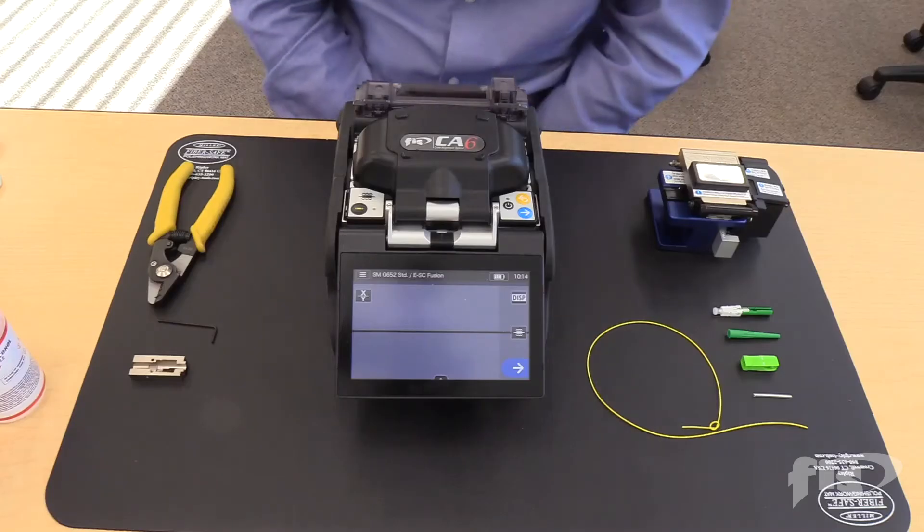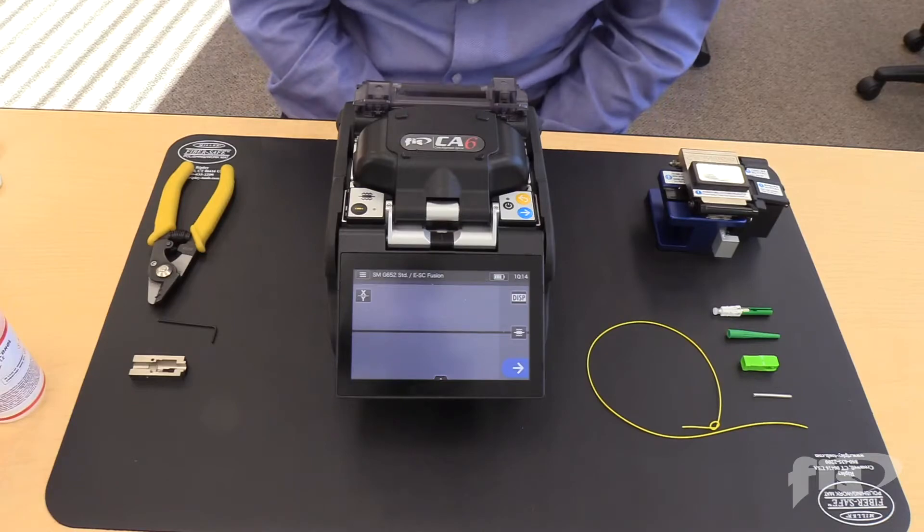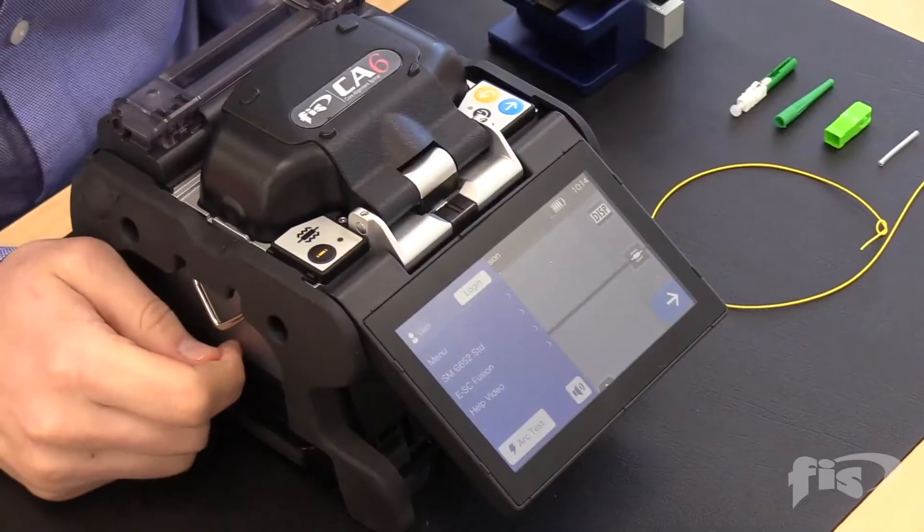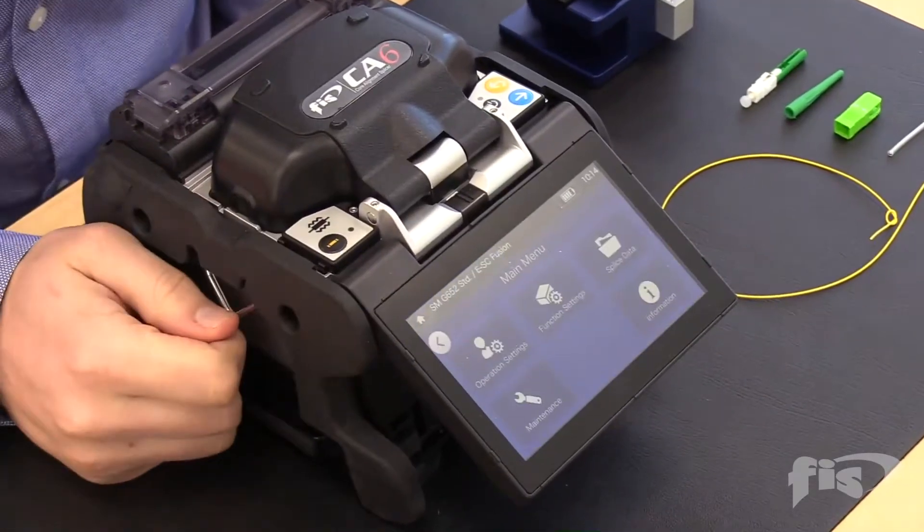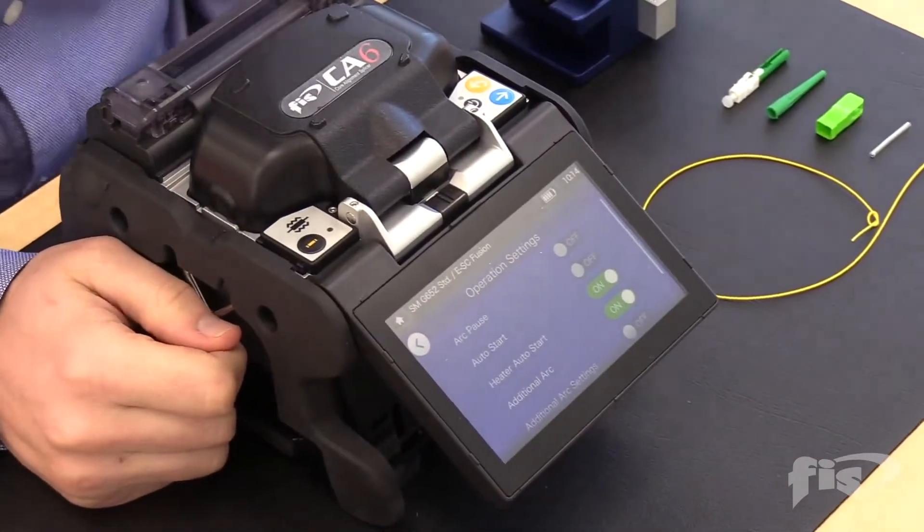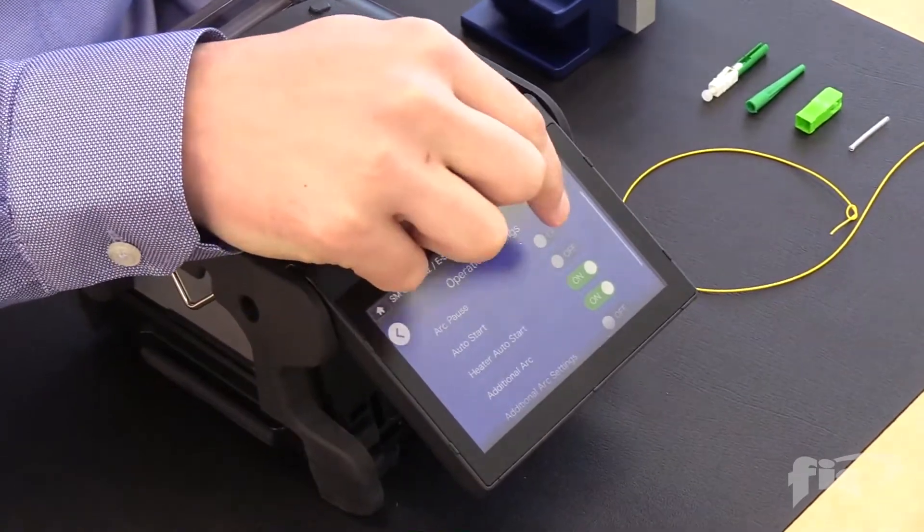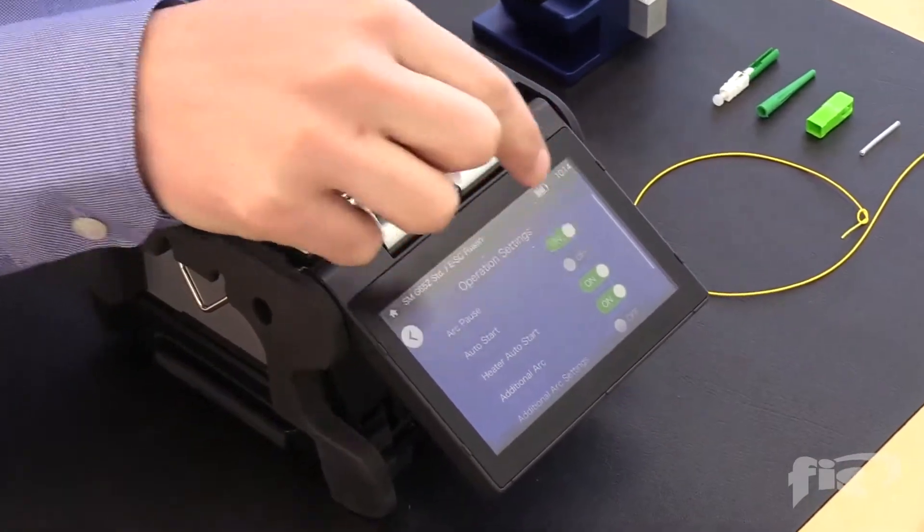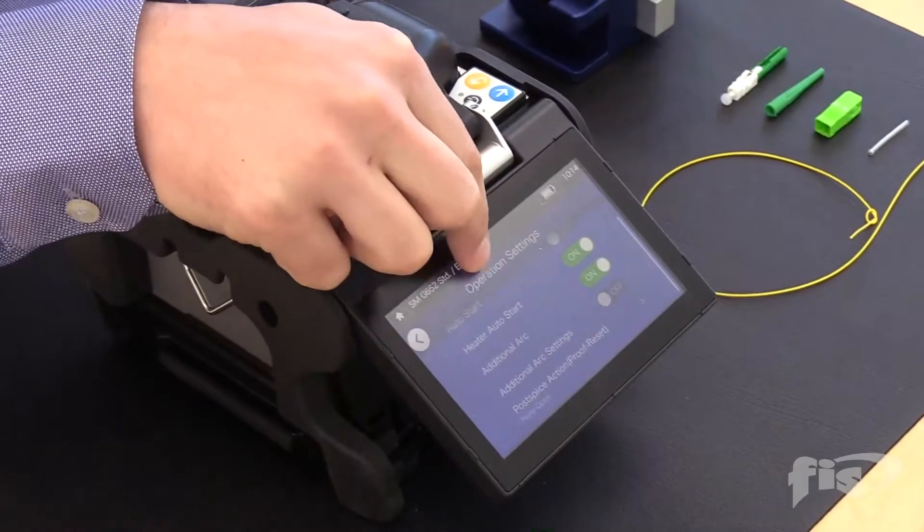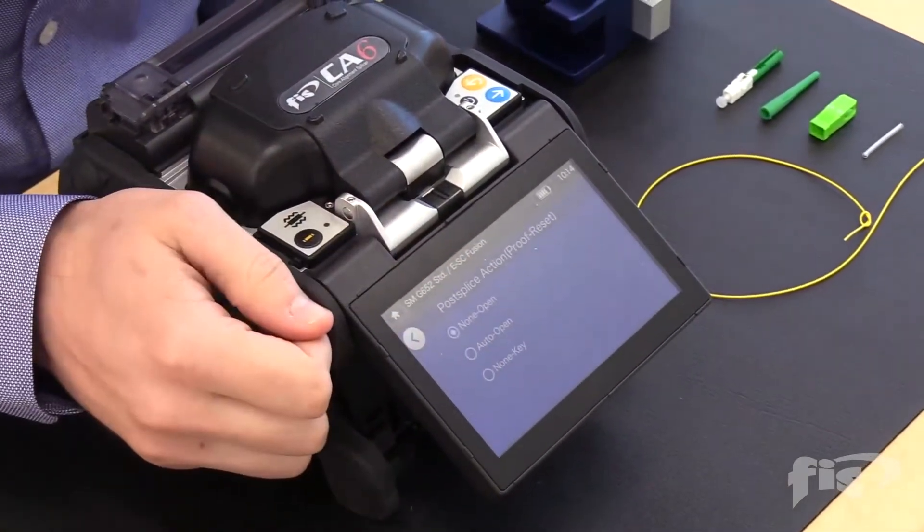Before terminating splice-on connectors, the fusion splicers need to be set up. Click the menu icon on the top left of the screen, select Menu and Operating Settings, and make sure the arc pause is turned off. Scroll down to Post Splice Action or Proof Test, select it and select None key.